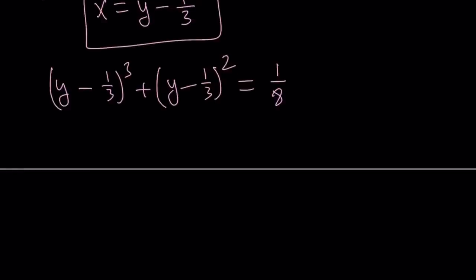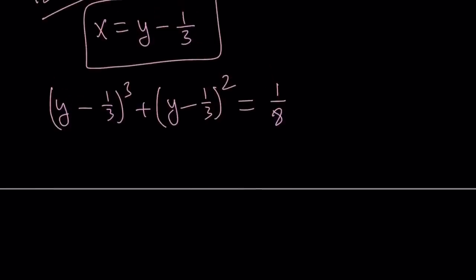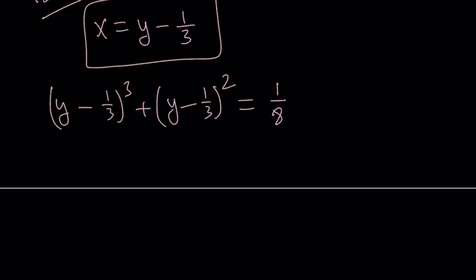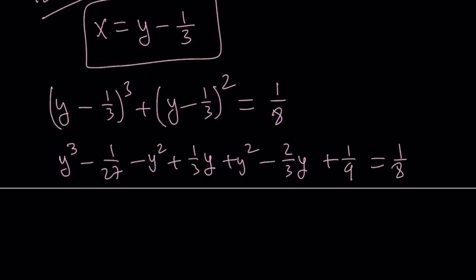And this is going to allow us to get rid of the quadratic term, I mean, not the radical. In other words, y squared. If you go ahead and expand this, you're going to get the following. Y cubed minus 1 over 27 minus y squared plus 1 over 3y plus y squared minus 2 over 3y plus 1 ninth equals 1 over 8. And then notice that we can go ahead and cancel out y squared. That's actually the goal.